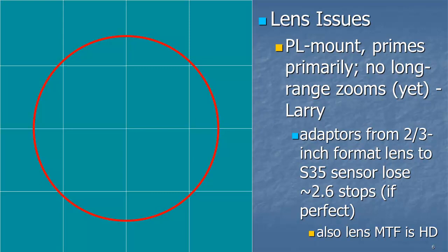and that's really pushing the technology. Certainly nothing near 100-to-1 at the moment. Or you could take that 100-to-1 lens that you use on a two-thirds-inch format lens and adapt it to the PL mount and make the image size larger for the Super 35 sensor. But if you do that, if the adapter is absolutely perfect, you're dropping 2.6 stops of light. Also, I would remind you that the MTF of the HD lens is, of course, HD.